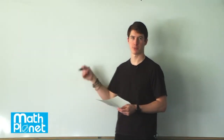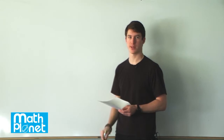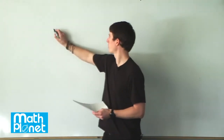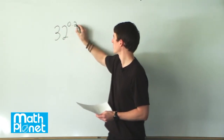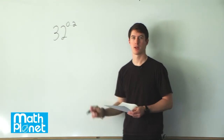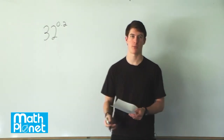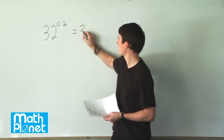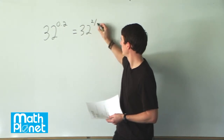Here we have a couple of powers or indices that we want to play with and see if we can find the answer more exactly. Let's see what tricks we have and see if we can solve for them. The first one is 32 to the power of 0.2. That's not something that we can solve right away, but we can rewrite this 0.2 as a fraction, which is more common when talking about indices. So we can write this as the same base, 32 to the power of 2 tenths.